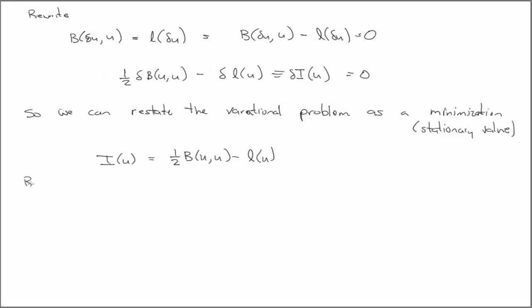And so this is where the Ritz method comes in. In the Ritz method, we're going to use the weak form to infer a quadratic functional, something of this form, a variational problem.